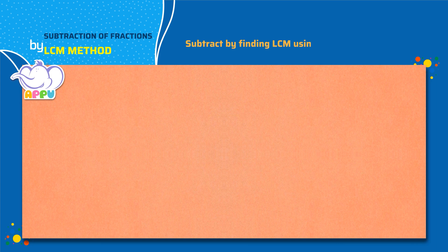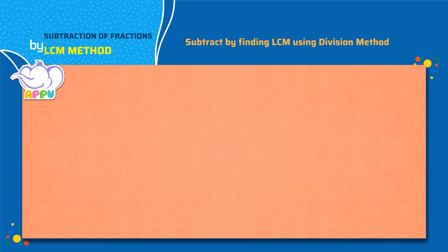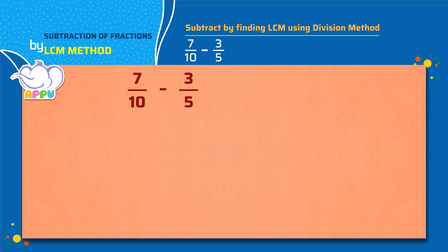Subtract by finding LCM using division method. 7 by 10 minus 3 by 5. We see that the denominators are not the same for both the fractions. Let's make the denominators the same by finding the LCM of the denominators 10 and 5.